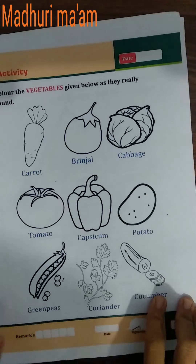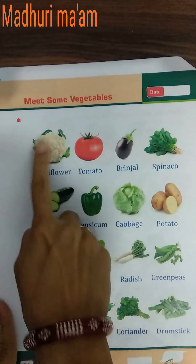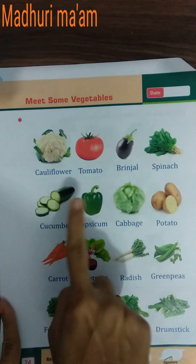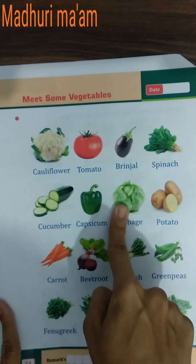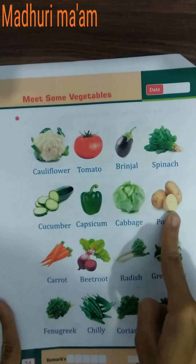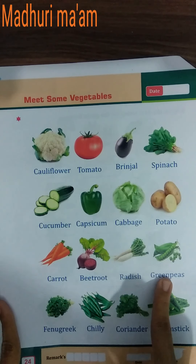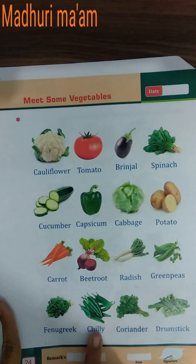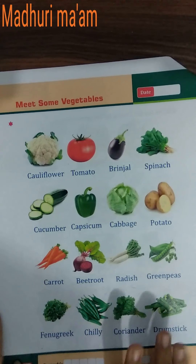Last day we learned all vegetable names like cauliflower, tomato, brinjal, spinach, cucumber, capsicum, cabbage, potato, carrot, beetroot, radish, green peas, fenugreek leaves, chili, coriander leaves, and drumstick.